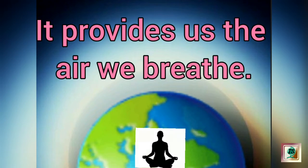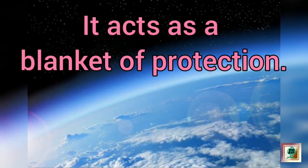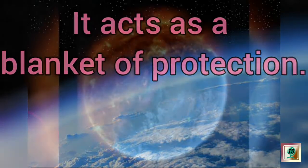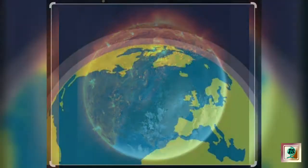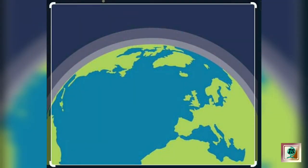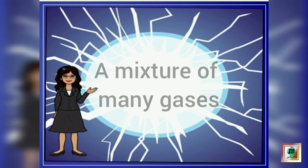First, it provides us the air we breathe. Second, it prevents the sun's harmful ultraviolet rays. Third, it acts as a blanket of protection — without this we would be baked alive by the heat of the sun during day and get frozen during night. Thus, it is this mass of air that has made the temperature of the earth livable.